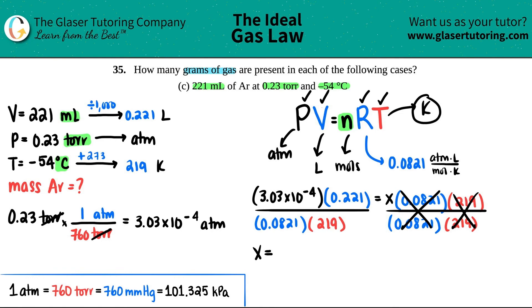3.03 times 10 to the negative fourth times 0.221 divided by 0.0821 and then divided by 219. Really small amounts of moles. Technically it should be two sig figs because the original pressure was two sig figs. If they do care about sig figs, it would be 3.7 times 10 to the negative six, and that's now moles of argon.